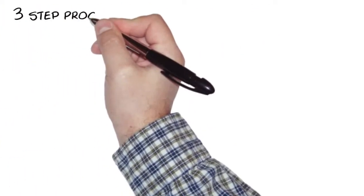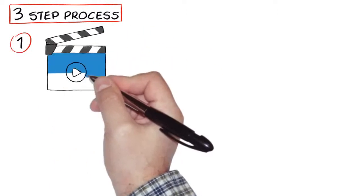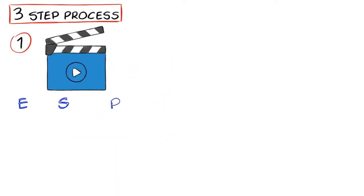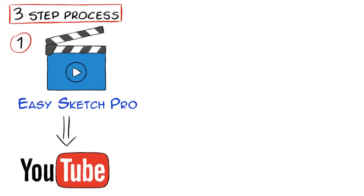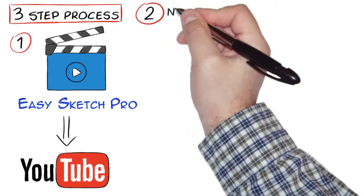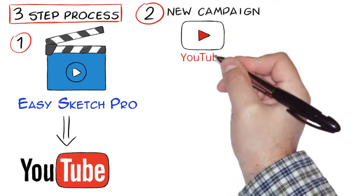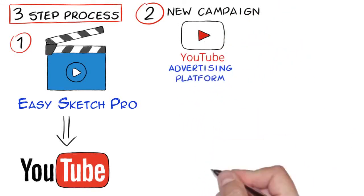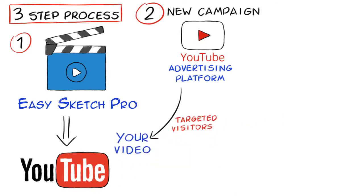It's a simple three-step process. One: create an attention-holding video using EasySketch Pro or your favorite video software and upload it to YouTube with a link in the description and caption back to your website or offer. Two: create a new campaign using the YouTube video advertising platform and then super-drive targeted visitors to your video on YouTube.